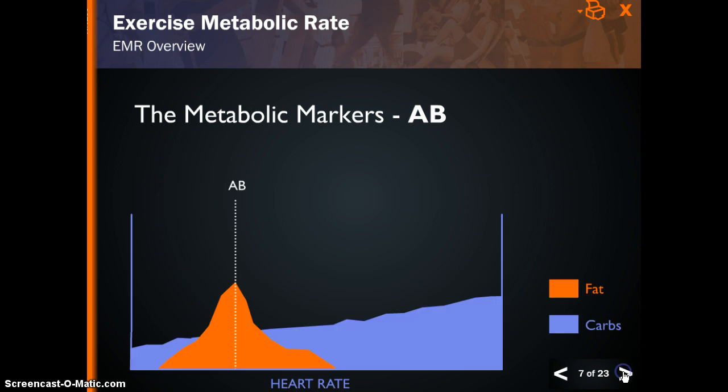In this graph, you are looking at an illustration of fat utilization in orange and carbohydrate utilization in blue. This is the profile of either a very deconditioned or, remarkably, an overtrained individual. In this profile, the client has a peak fat utilization, or AB, at a relatively low heart rate, and then switches to carbohydrates as the primary energy resource throughout the rest of the workload intensities.